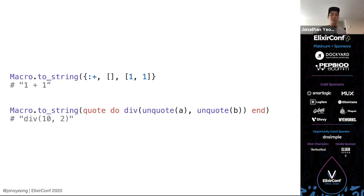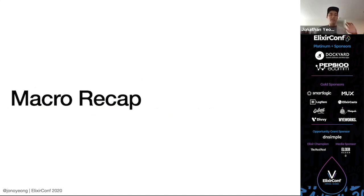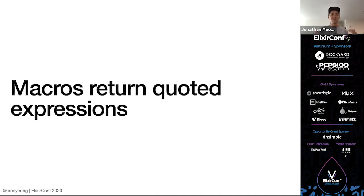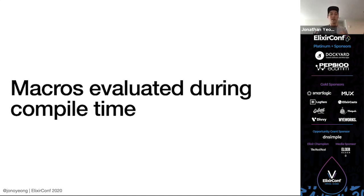Let's do a quick recap of everything we just learned about macros. Big takeaway number one: macros take quoted expressions, also known as abstract syntax trees, representations of data. Macros return quoted expressions — in that middle section, macros can alter the quoted expression and return something new. And also, macros are evaluated during compile time.